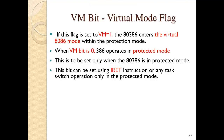The VM bit, that is the virtual mode flag: if this flag bit is set to one, the 80386 enters virtual mode within the protection mode. When the VM bit is zero, the 386 operates in protected mode. This bit can be set only when the 386 is in protected mode, using the IRET instruction or any task switch operation.